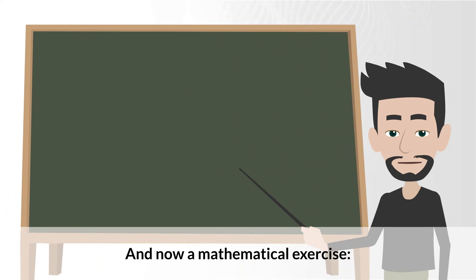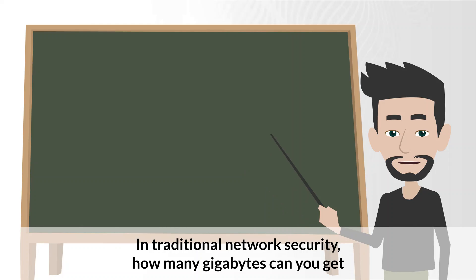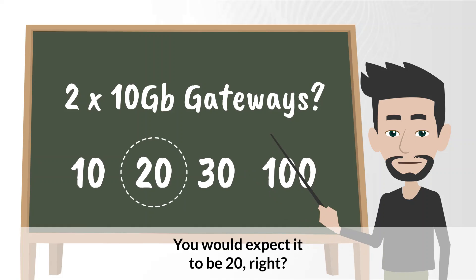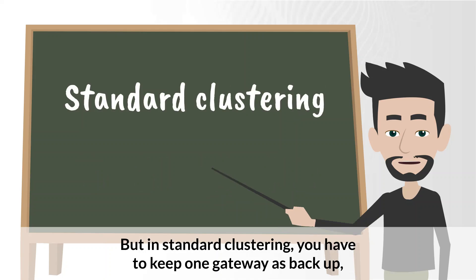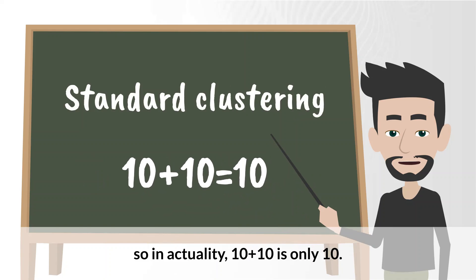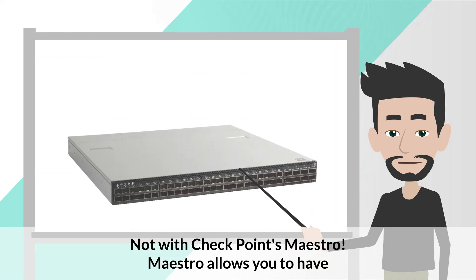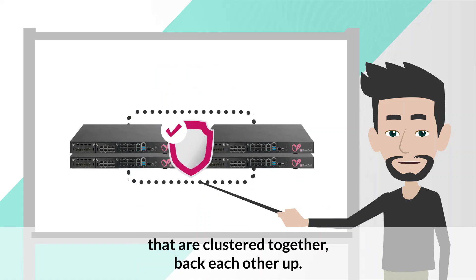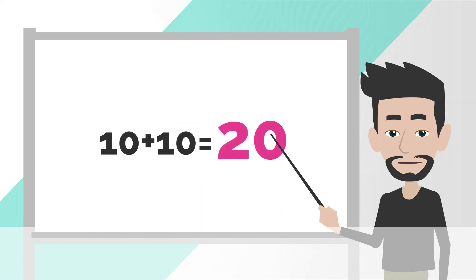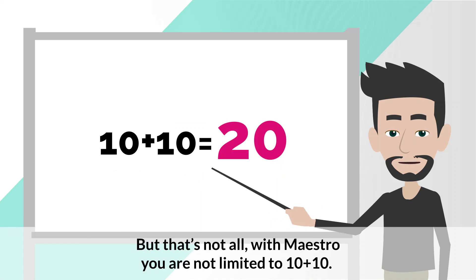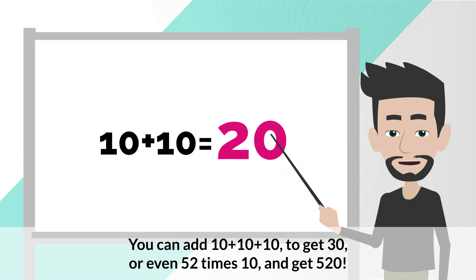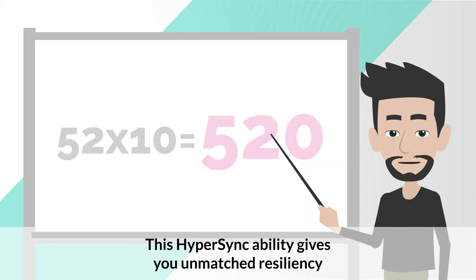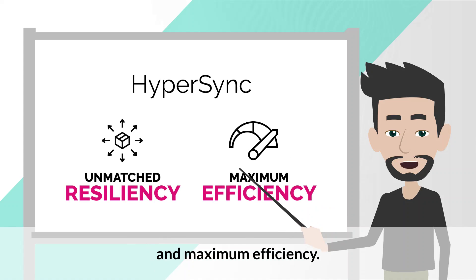And now, a mathematical exercise. In traditional network security, how many gigabytes can you get from two 10 gigabytes per second gateways? You would expect it to be 20, right? But in standard clustering, you have to keep one gateway as backup. So in actuality, 10 plus 10 is only 10. Not with Checkpoint Maestro. Maestro allows you to have full redundancy within a system, because all the gateways that are clustered together back each other up. Since all hardware resources are utilized, 10 plus 10 is back to being 20. But that's not all. With Maestro, you are not limited to just 10 plus 10. You can add 10 plus 10 plus 10 to get 30, or even 52 times 10 and get 520. This hypersync ability gives you unmatched resiliency and maximum efficiency.